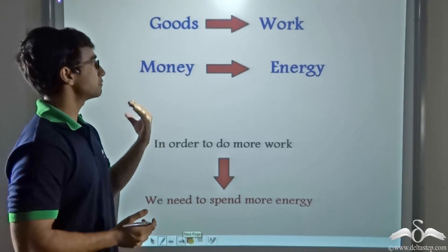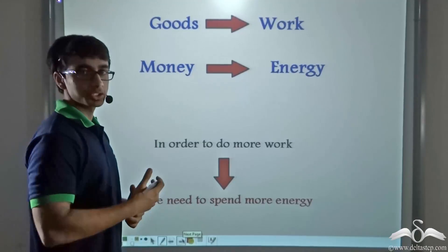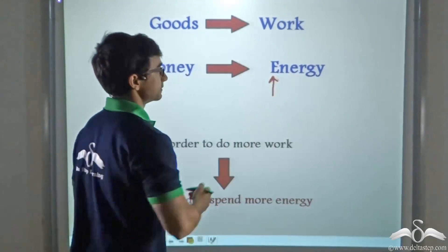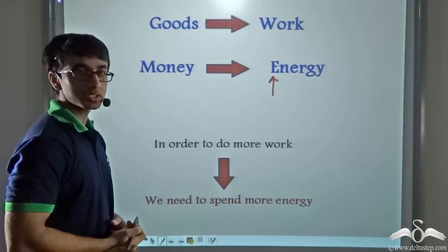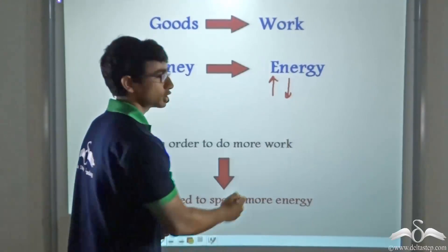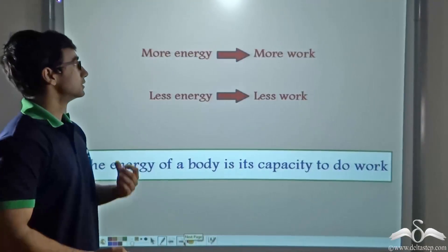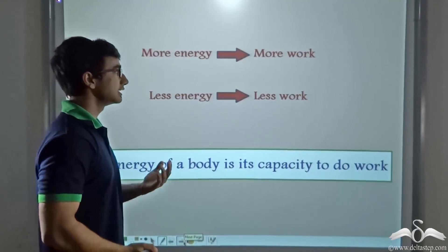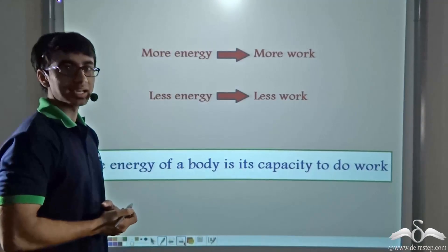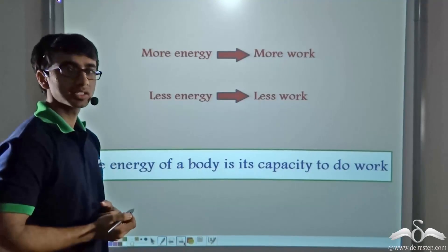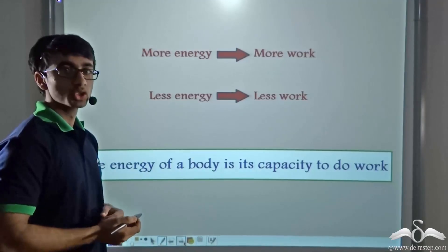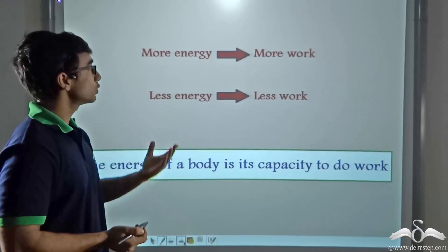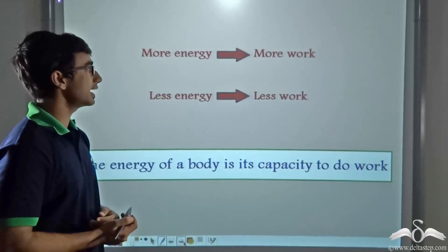Thus, comparing goods to work and money to energy, I can say in order to do a greater amount of work — that is for a longer period of time — I will need to spend more energy. Similarly, if I do a lesser amount of work, I will need to spend a lesser amount of energy. For example, if I have to run for one meter or in another case I have to run for 10 meters, obviously running 10 meters requires more energy. So when more work is being done, more energy is required and vice versa.